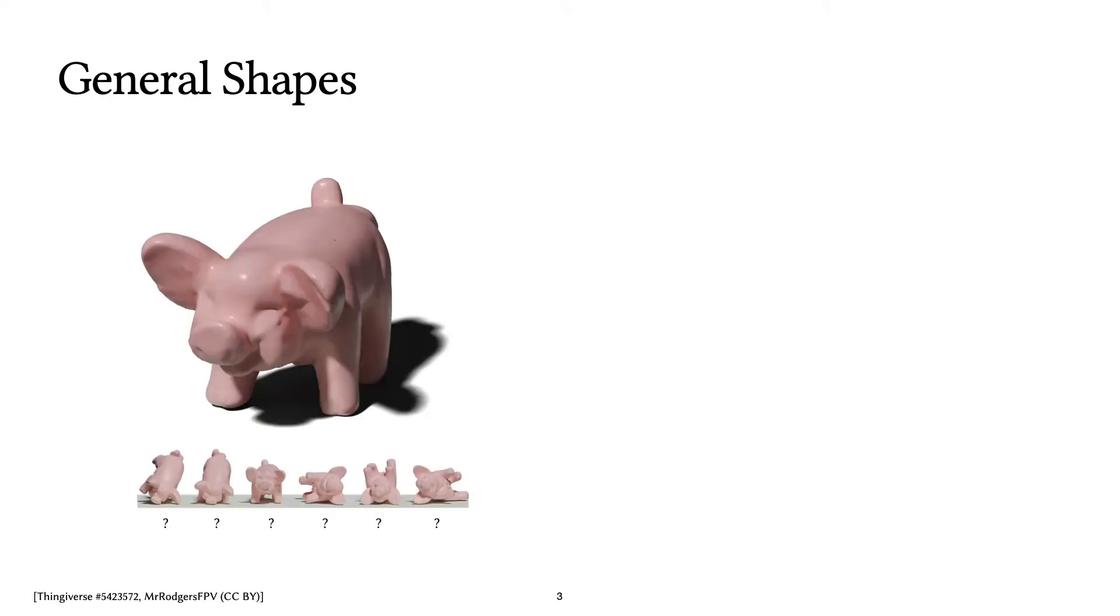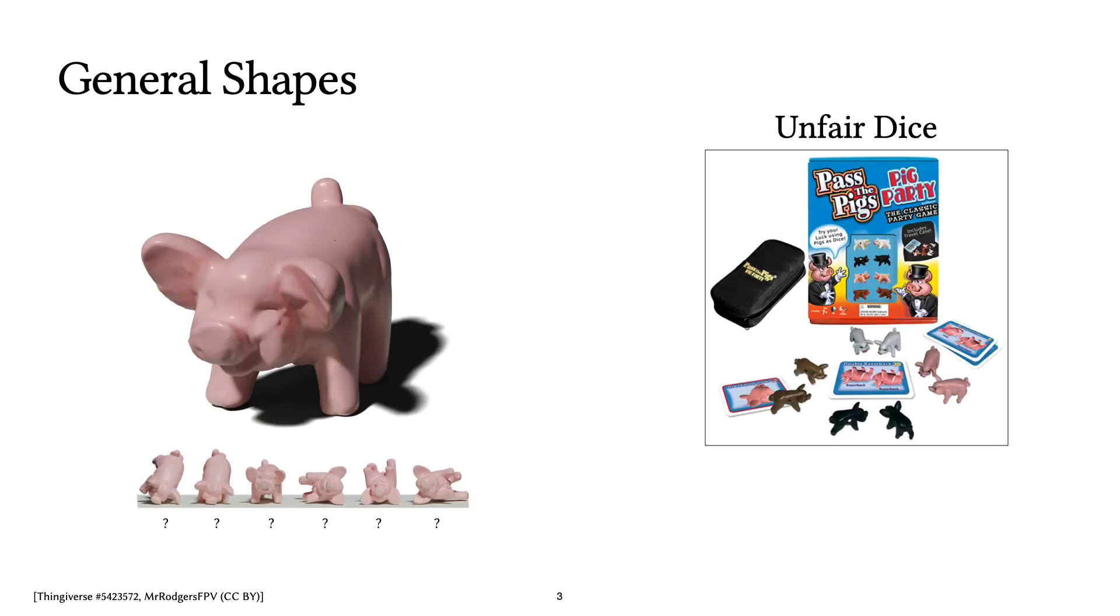But what about a more general and complex shape, like this Piedlert model that has actually been used as an unfair dice in this board game? This shape is no longer symmetric, so you cannot make the same argument.